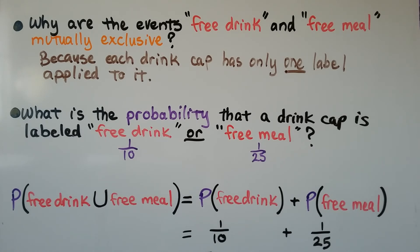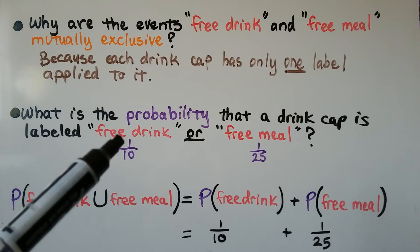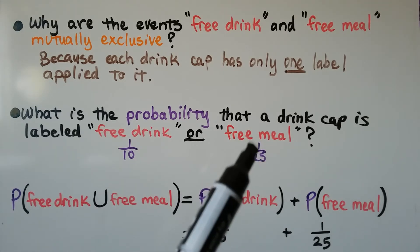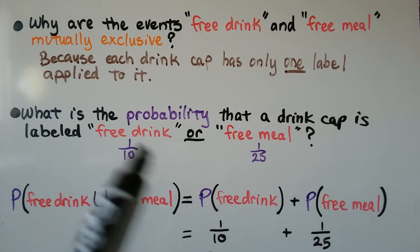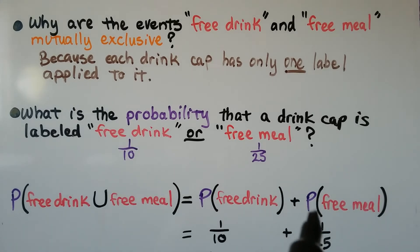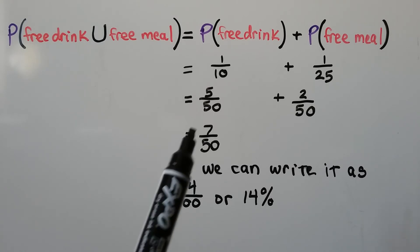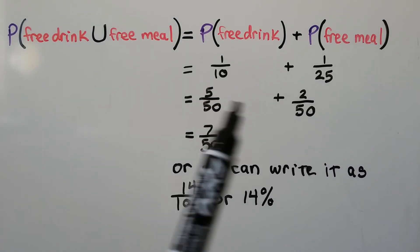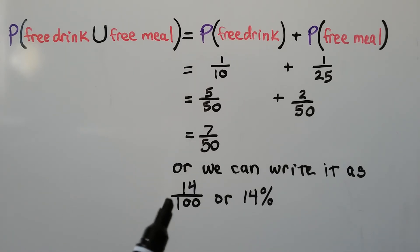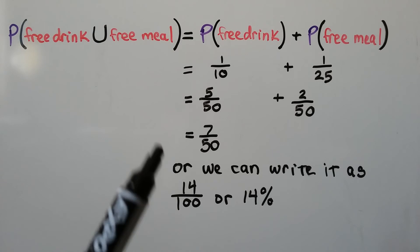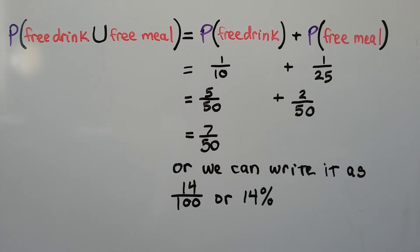What's the probability that a drink cap is labeled free drink or free meal? Free drink was one-tenth probability and free meal was one-twenty-fifth probability. The probability of free drink or free meal equals the probability of free drink plus the probability of free meal. We add one-tenth plus one-twenty-fifth. We need a common denominator, so this becomes five-fiftieths plus two-fiftieths, giving us seven-fiftieths. We can also write it as fourteen-hundredths or fourteen percent, but seven-fiftieths is acceptable.